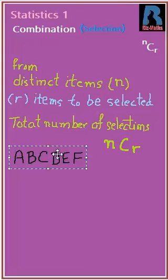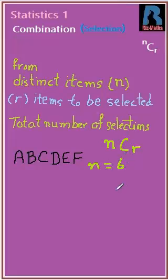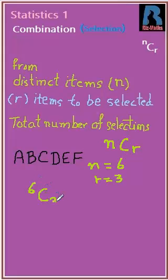For example, if we have six distinct items A, B, C, D, E, F — six different letters — then N is equal to 6. If we want to select three letters, then R equals 3, so we calculate 6C3, which simplifies to 20. So 20 different selections are possible.